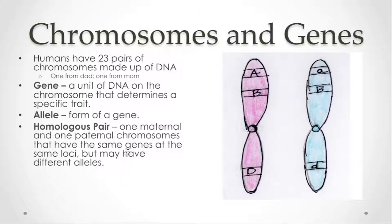Recall that humans have 23 pairs of chromosomes and each of these chromosomes is essentially just made up of tightly wound DNA. As we see in this pair of chromosomes on the figure to the right, this is a homologous pair of chromosomes, meaning that these are the same chromosomes. They have the same genes at the same location. The gene forms might be different, but they contain the same genes.